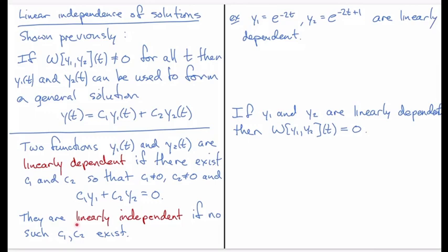So that means the two are linearly dependent and these two functions can be called linearly independent if no such c1 and c2 exist.